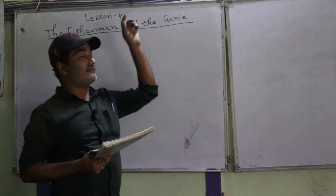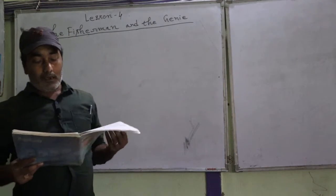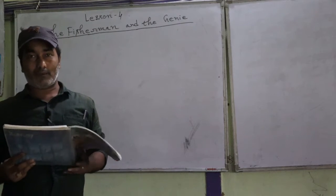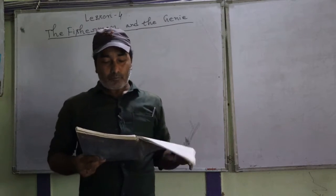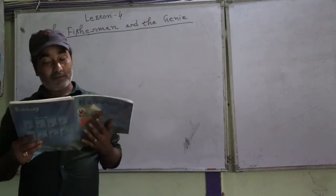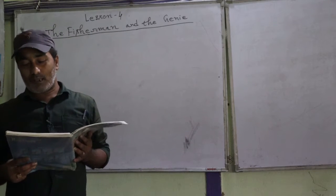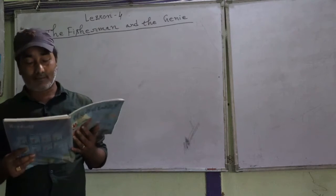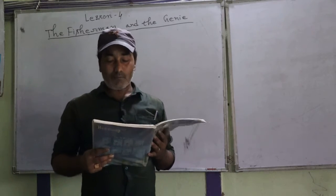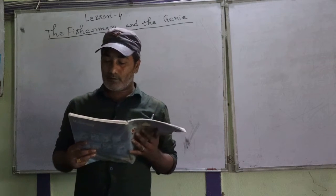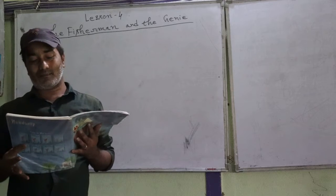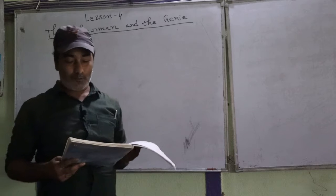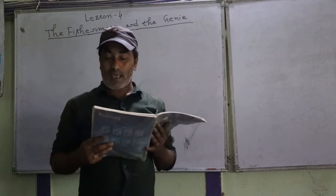Once upon a time there was a fisherman. This fisherman was so old and so poor that he could scarcely manage to support his wife and three children. He was so poor and old that he could scarcely manage to support his wife and three children.